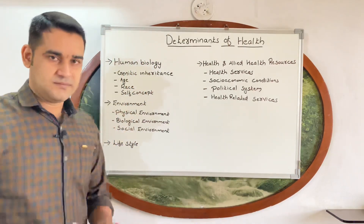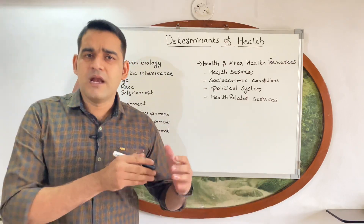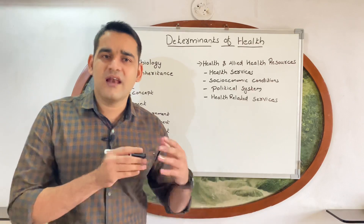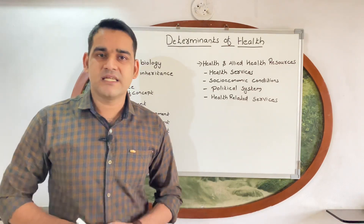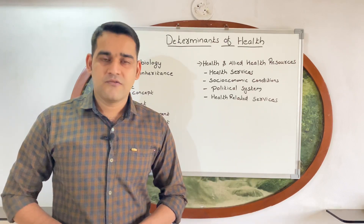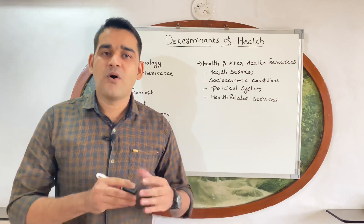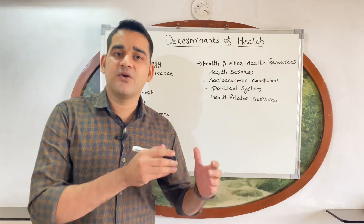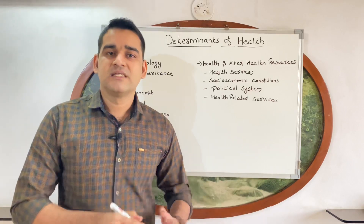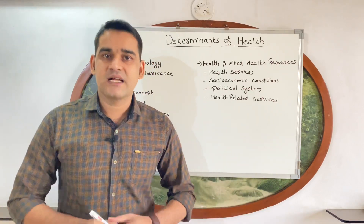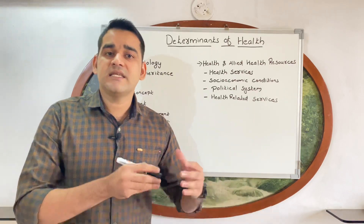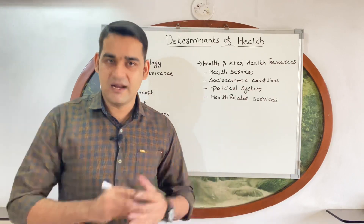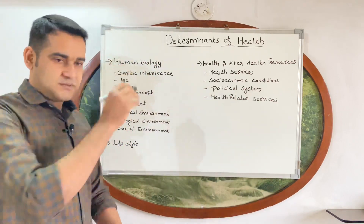Next is race, which means which category you belong to — Asian, African, American, European, or Mongolian. Some diseases are seen in particular races. For example, sickle cell anemia is most commonly seen in Africans. It is seen more in Africans compared to Europeans, where sickle cell anemia is less common. So race is also a factor that decides your health.